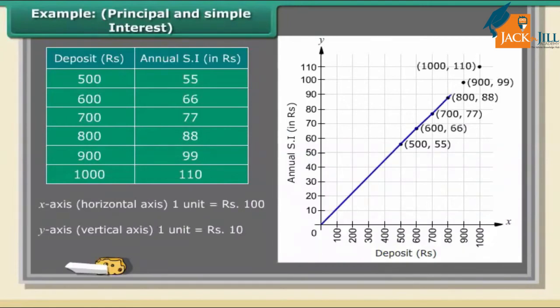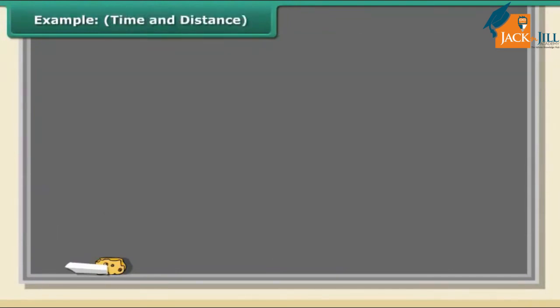Data can be presented in the form of tables. Graphs are visual representations of data. In this chapter let us study... We get a graph that is linear. 1. For rupees 500 on the x-axis, we get interest to be rupees 55 on the y-axis. 2. For rupees 88 on the y-axis, we get the deposited amount of rupees 800 on the x-axis.